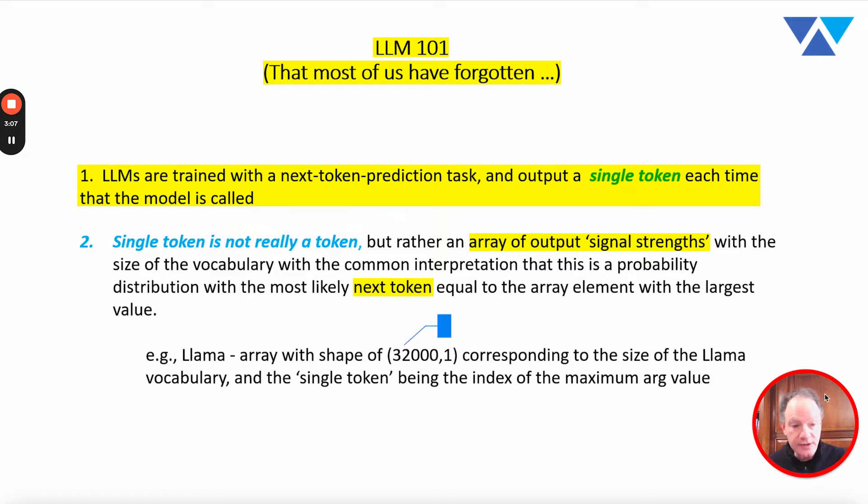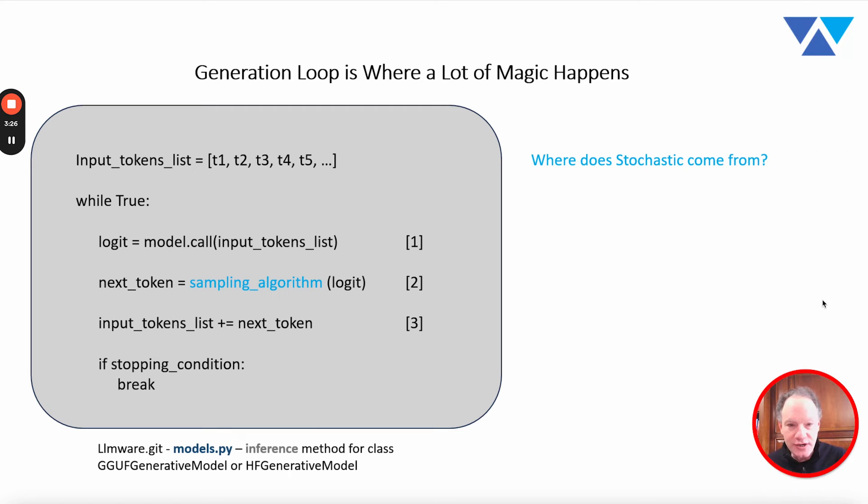So if you're using a LLAMA model as an example, the LLAMA vocabulary is 32,000 tokens—not words, not letters, but 32,000 tokens. And so the output from every single turn of the model is this array with this shape of 32,000 by one, and then each of those indices corresponding to a particular token in the LLAMA vocabulary. Alright, so far so good.